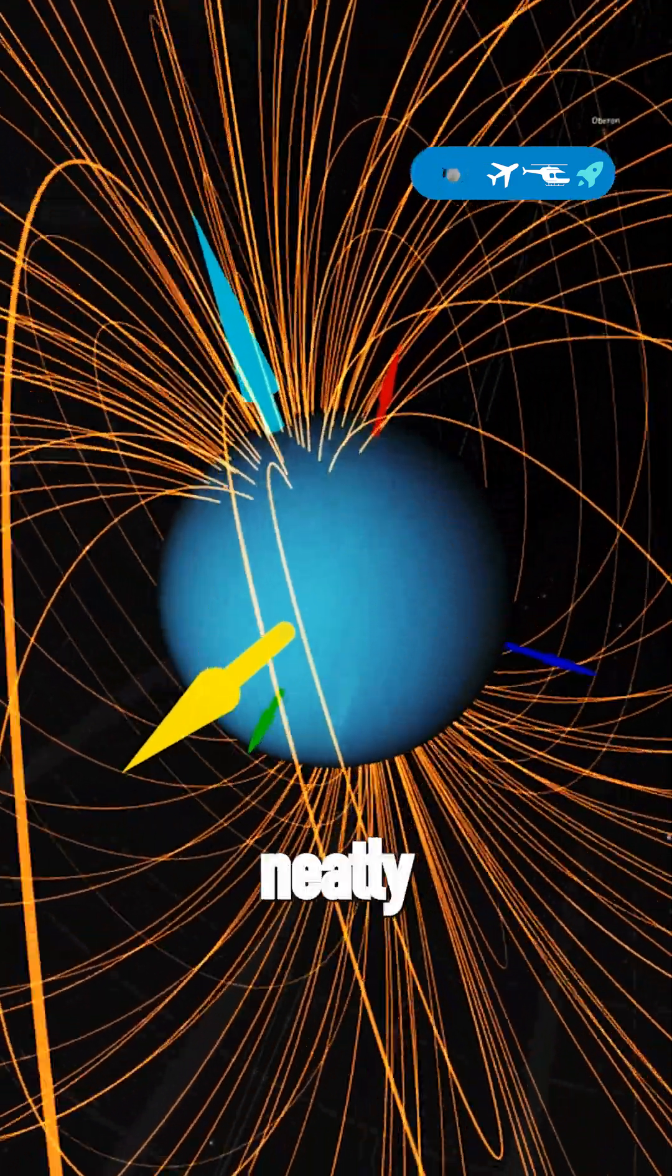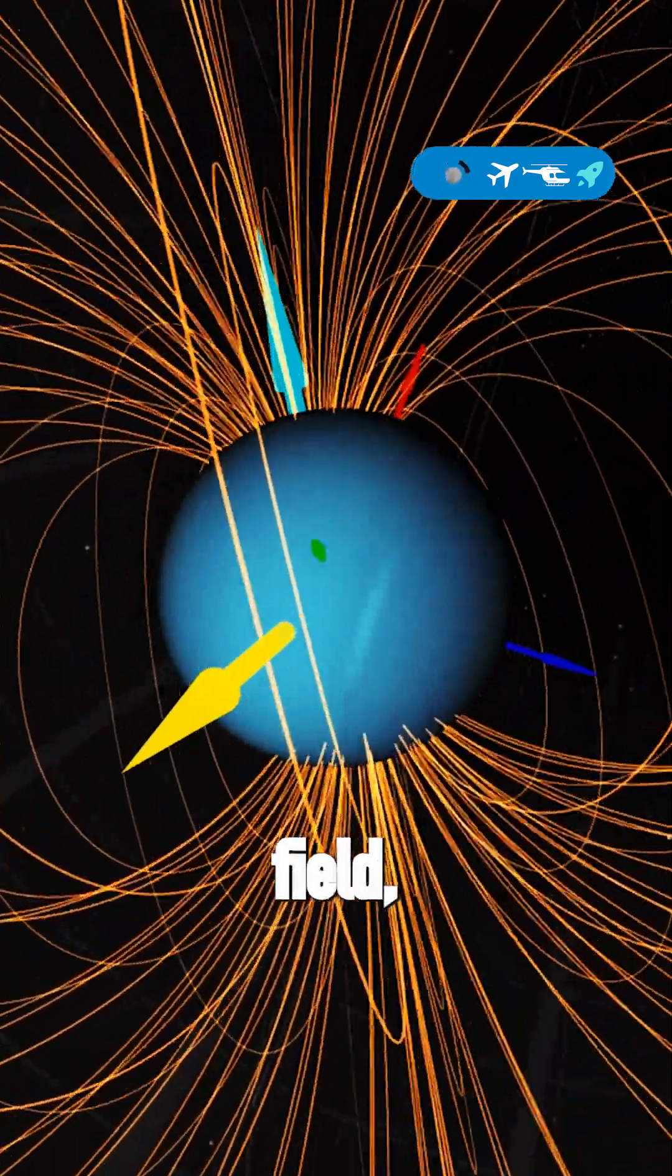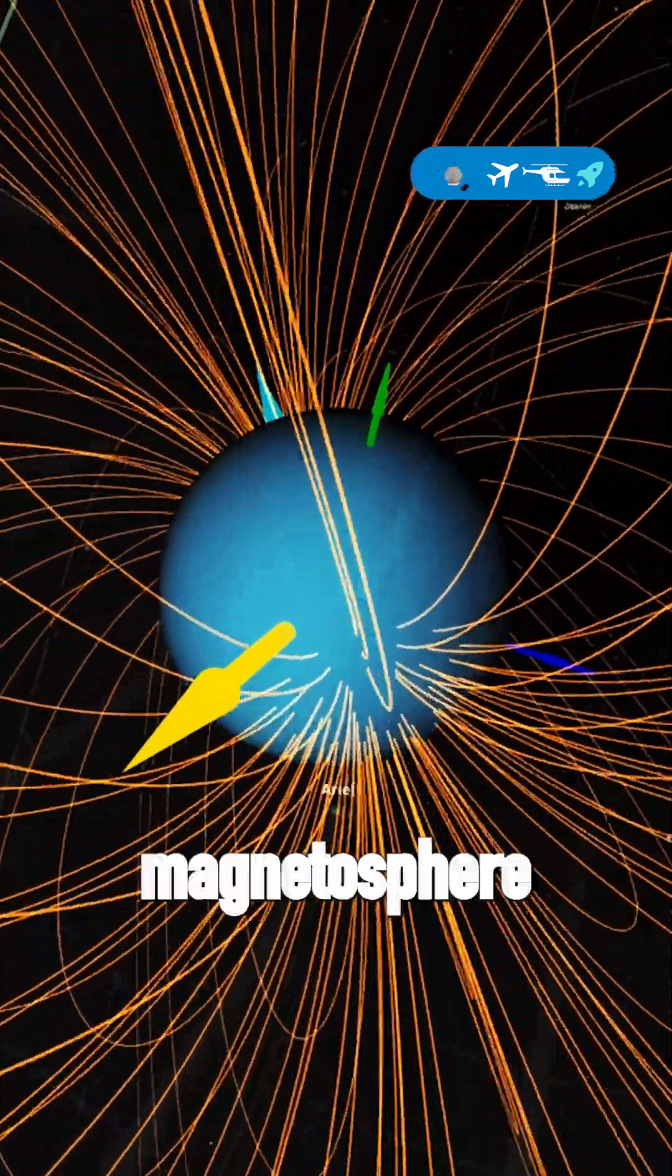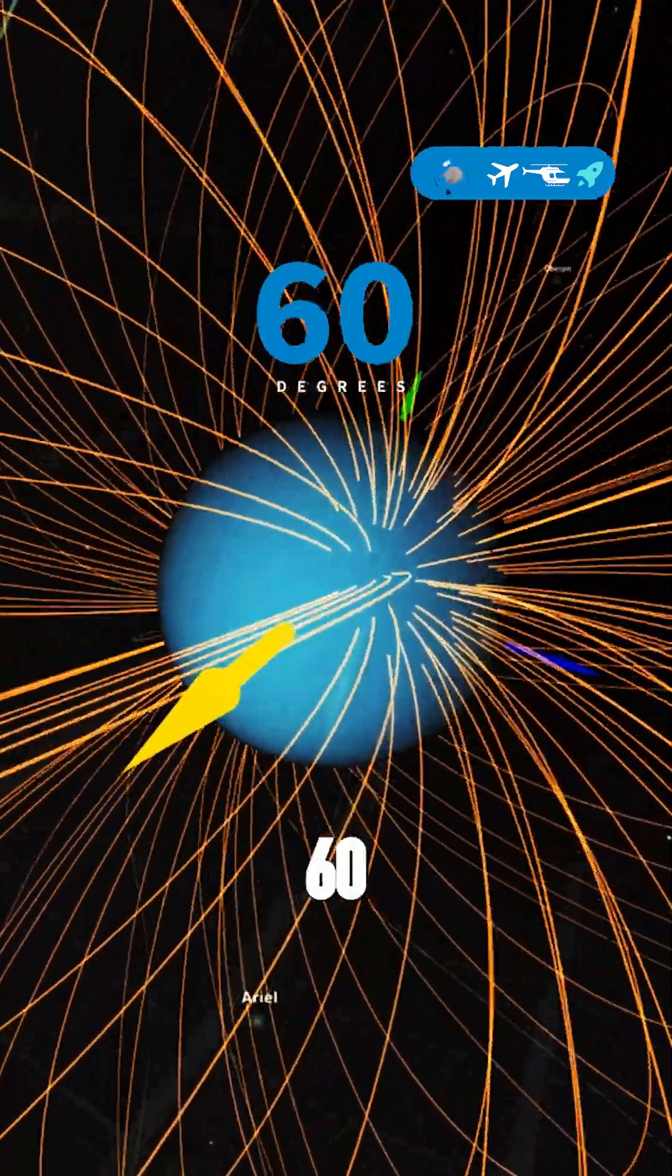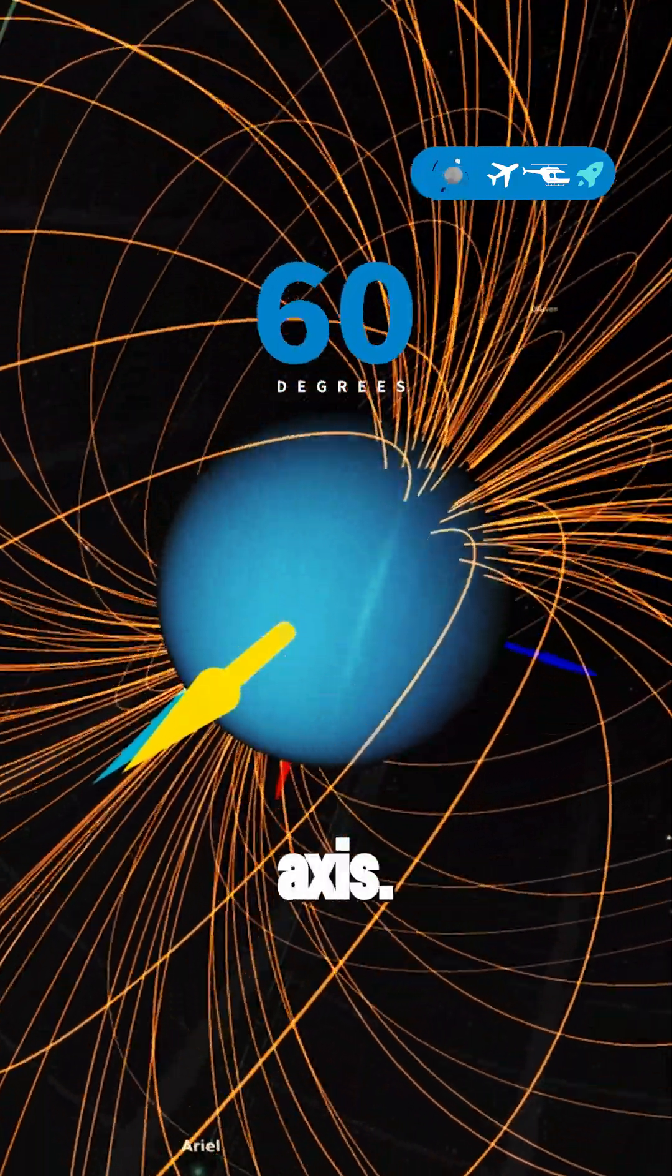Unlike Earth with its neatly aligned magnetic field, Uranus boasts a magnetosphere tilted at a staggering 60 degrees from its rotational axis.